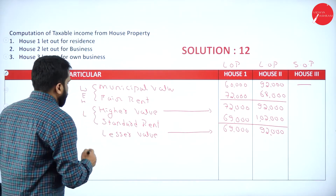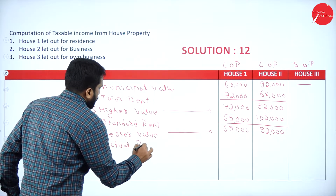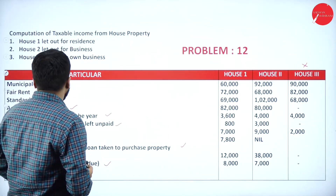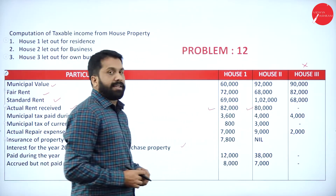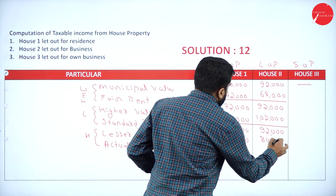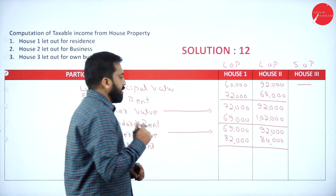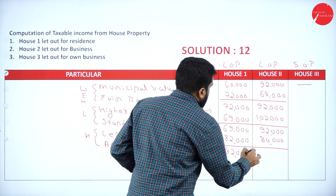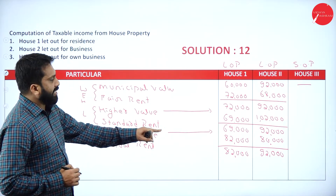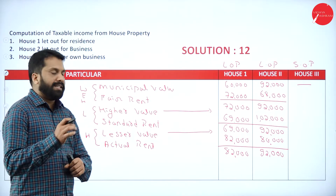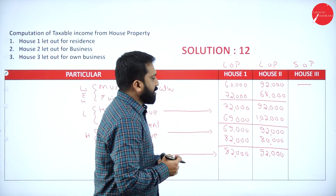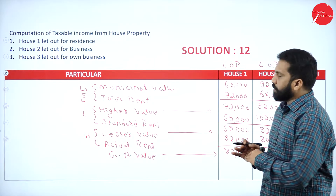Now compare this lesser value with actual rent — whichever is higher. Your actual rent received is 82,000 and 80,000. So we take 82,000 and 92,000 as the higher values respectively. This gives us the Gross Annual Value: 82,000 for House 1 and 92,000 for House 2.